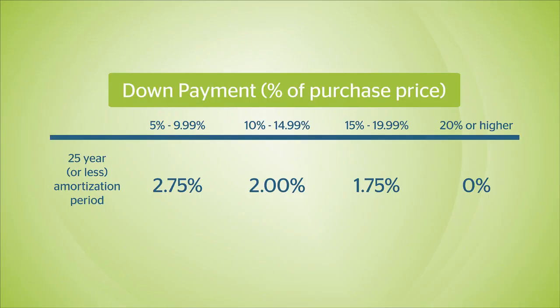If you want to decrease your insurance premium, you will need to increase your down payment. Additionally, for homes valued over $1,000,000, you are required to put a minimum of 20% down, as they do not qualify for mortgage default insurance.